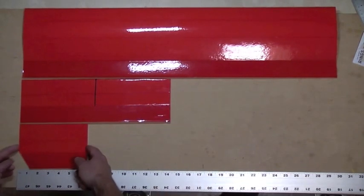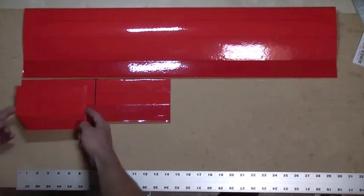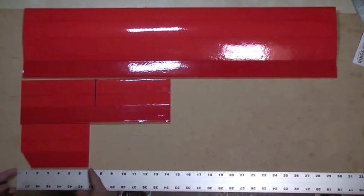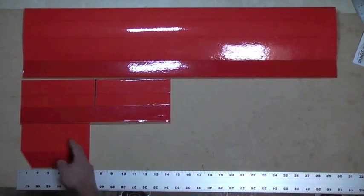And then your vertical stabilizer is typically 40 to 50% of the surface area of your horizontal stabilizer. So in this instance, it's right about 7 inches for my vertical stabilizer.